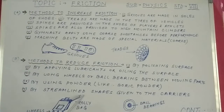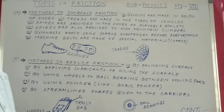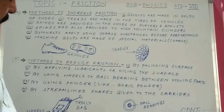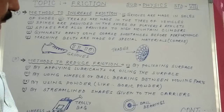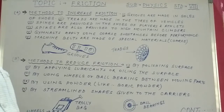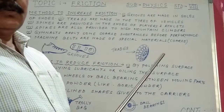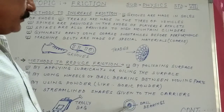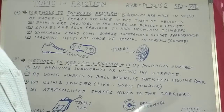Number three: by using wheels or ball bearings between moving parts. Wheels reduce friction — for example, a trolley bag with wheels is easy to carry. Ball bearings have small iron balls between two moving parts; they reduce friction and help the wheels move properly.